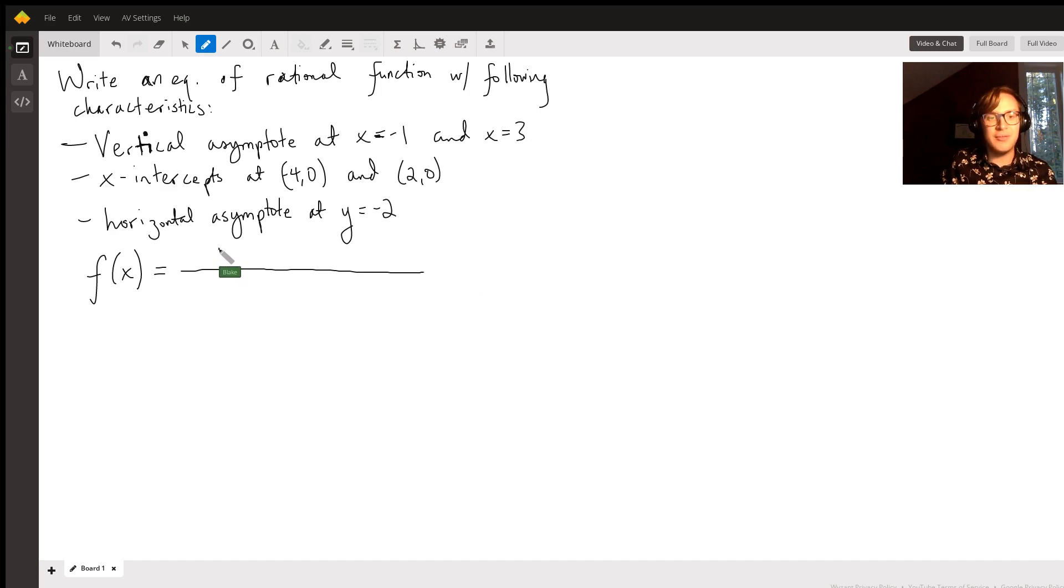Well, we'd have these factors up here, x minus 2 times x plus 4. Because if we set this top part, the numerator, equal to 0, we would get the answer as negative 4, and we would get the answer positive 2. So that's the first part.